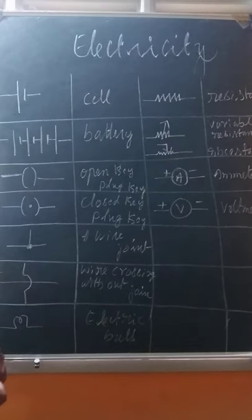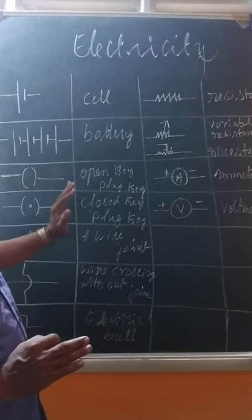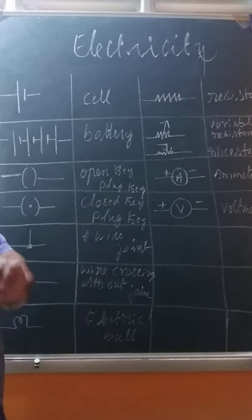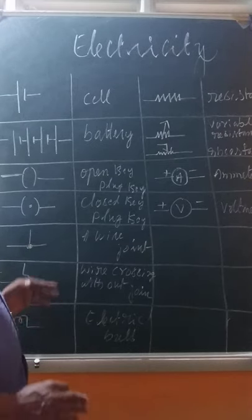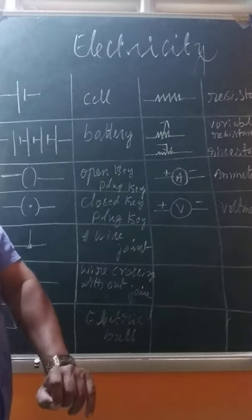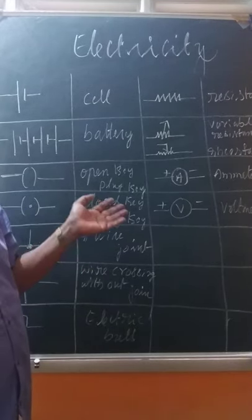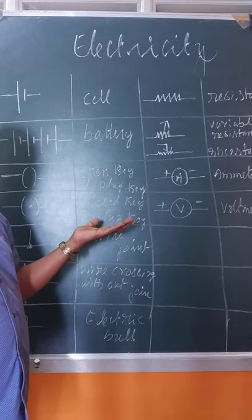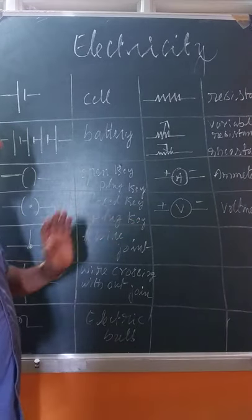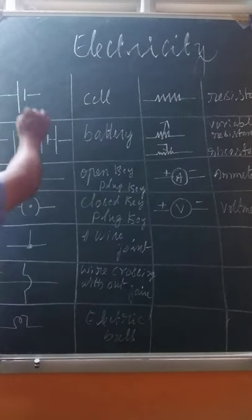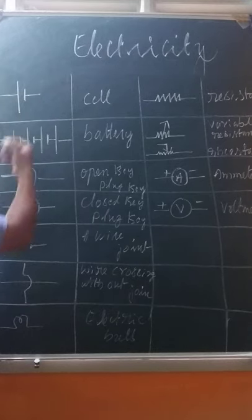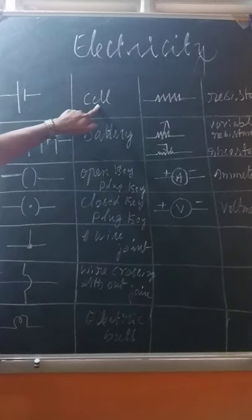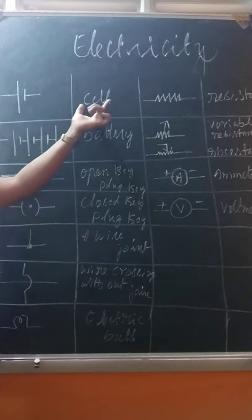These are the symbols I have written here. All these components are used in a circuit. In your highest studies there will be hundreds more, but for now we have 11. I will explain them one by one. The first one, already explained in the previous class: one long line and one short line — that is called a cell.